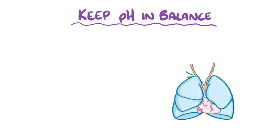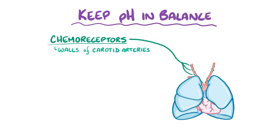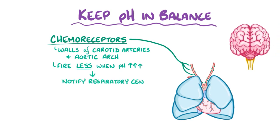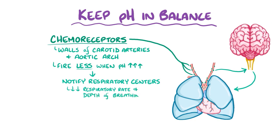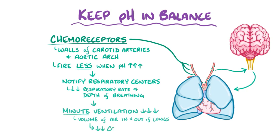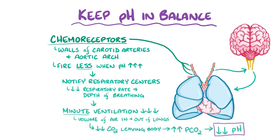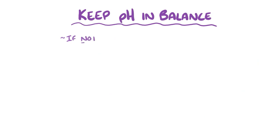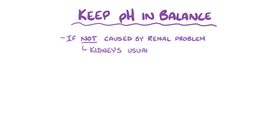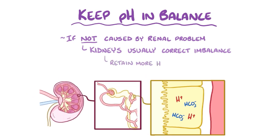Another mechanism involves the respiratory system. Chemoreceptors located in the walls of the carotid arteries and in the wall of the aortic arch fire less often when the pH rises, notifying the respiratory centers in the brainstem to decrease the respiratory rate and depth of breathing. As breathing becomes slow and shallow, minute ventilation decreases, slowing how much carbon dioxide leaves the body and increasing the partial pressure of carbon dioxide, which decreases the pH. Finally, if metabolic alkalosis isn't caused by a renal problem like diuretics or extracellular fluid volume contraction, the kidneys usually correct the imbalance several days later by retaining more hydrogen ions and reabsorbing less bicarbonate, so it's more easily dumped into the urine.